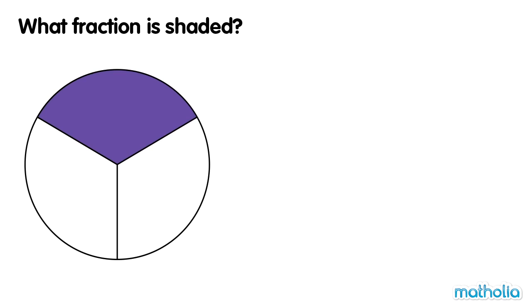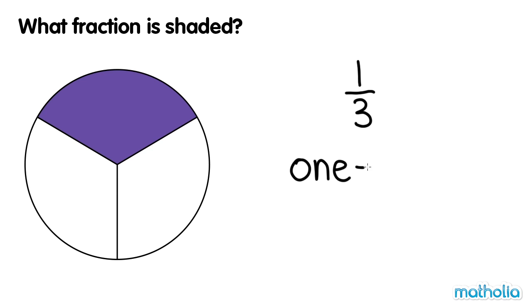What fraction is shaded? The circle is divided into three equal parts. One part is shaded. One third of the circle is shaded. One third.